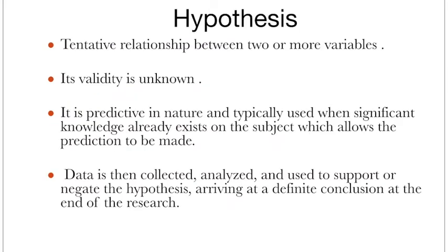As I stated at the beginning, a hypothesis is an assumption — a tentative relationship between two or more variables. Whenever we want to test something scientifically, we frame a hypothesis, which means an assumption. When we frame it, its validity is unknown. It is predictive in nature — we are predicting something with the help of hypothesis. It is typically used when significant knowledge already exists and we want to check whether a relationship exists in real life. We can predict that relationship or see the association, the cause and effect, with the help of hypothesis.